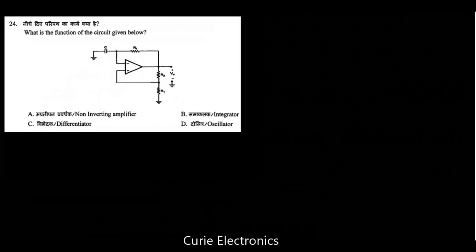Next question: what is the function of the circuit given? It is not a non-inverting amplifier, not an integrator, and not a differentiator. There is no input to the circuit, so it looks like an oscillator. An oscillator self-oscillates if the gain is set properly and starts oscillating by itself. So this circuit is an oscillator — we can identify it easily because there is no input coming to it.